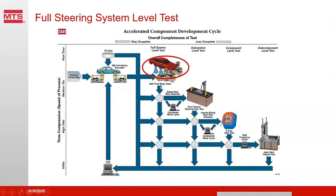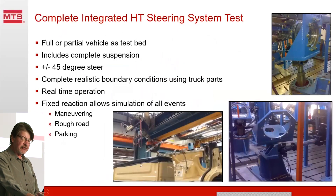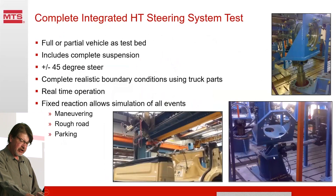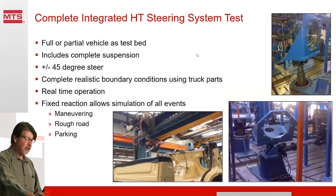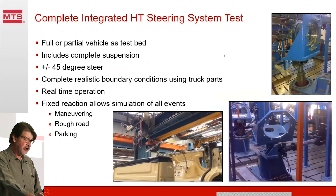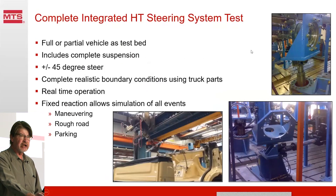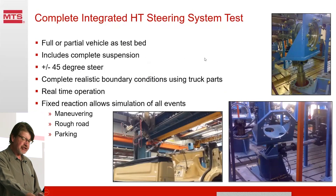Maybe we want to look at a full system level test — what happens when we integrate it into the vehicle? This is an example of a full system test for a heavy truck. The truck is put on here, it's loaded, and supported by the steering wheels. We put brackets here, and here's the actuator to provide steer loads, so the truck gets a vertical force. We get steering wheel input from part of the truck chassis, provide dynamic loads to load the steering system while it runs back and forth, and get complete realistic boundary conditions using real truck parts. We can do real-time simulation, doing steering and static vertical. Dynamic vertical and other degrees of freedom could be added. We can simulate maneuvering, rough road, and parking — fixed reaction means we're not limited by displacements at low frequencies. We can simulate driving into a parking lot, stopping, turning, and backing up.